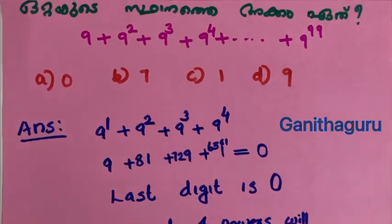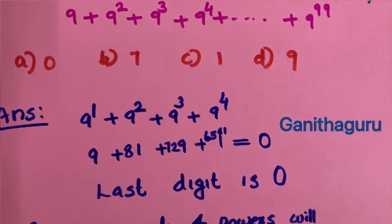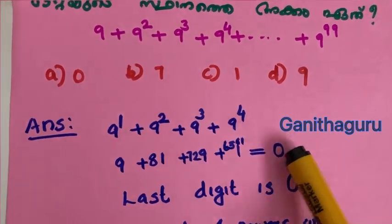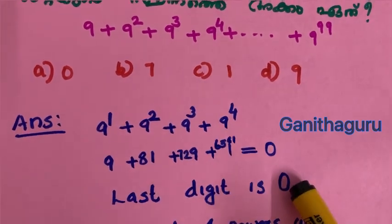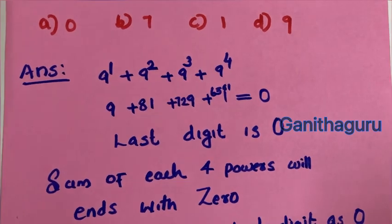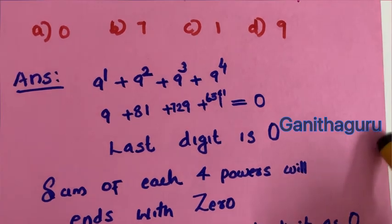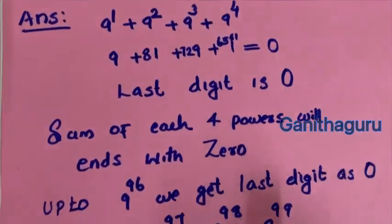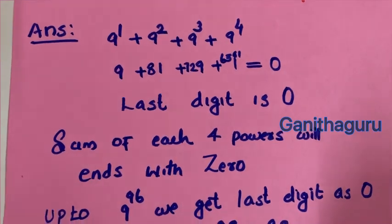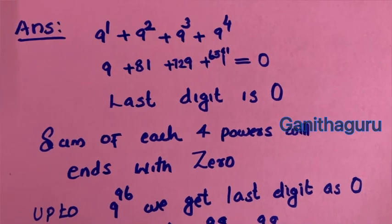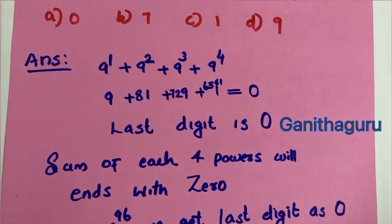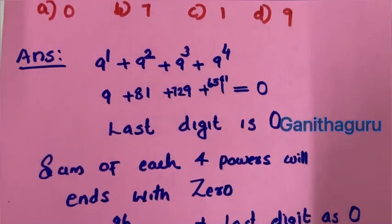The last digit is 0. The sum of each 4 powers will end with 0. Up to 9 raised to 96, we get the last digit as 0, because 96 is divisible by 4.